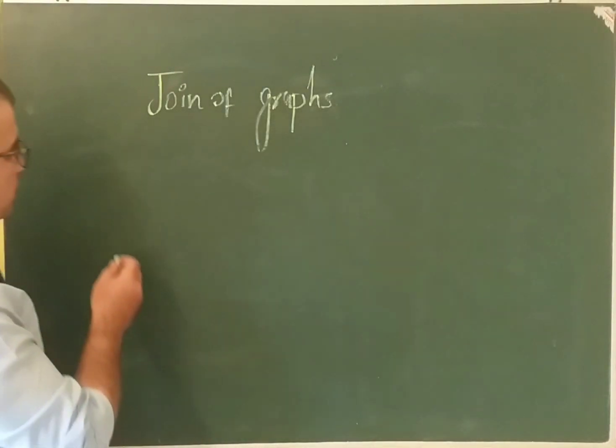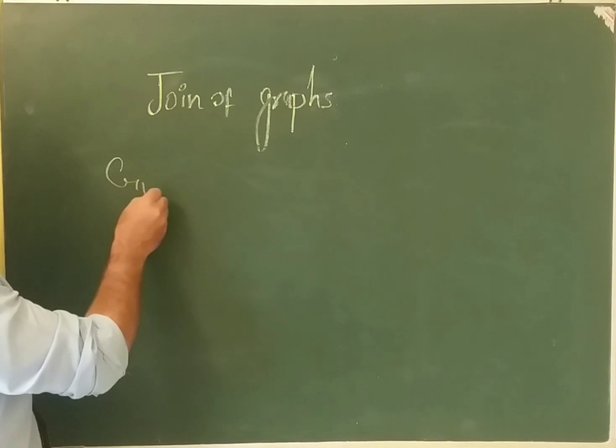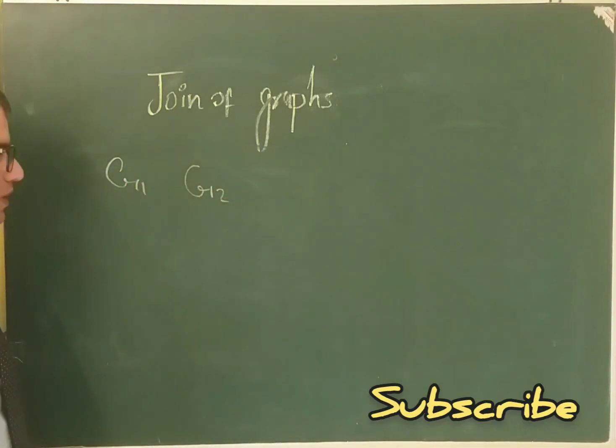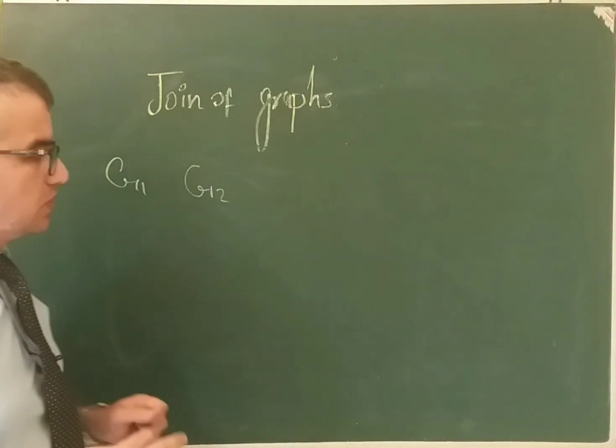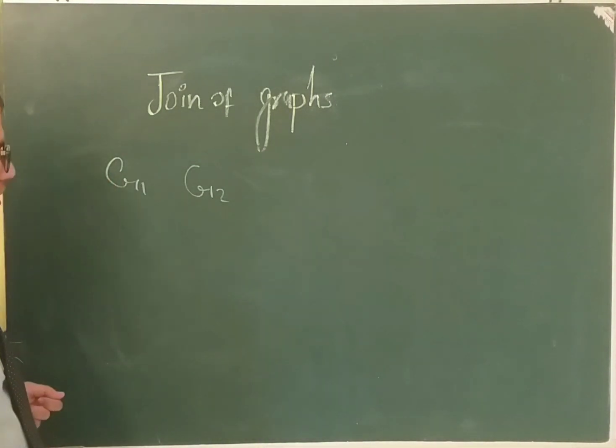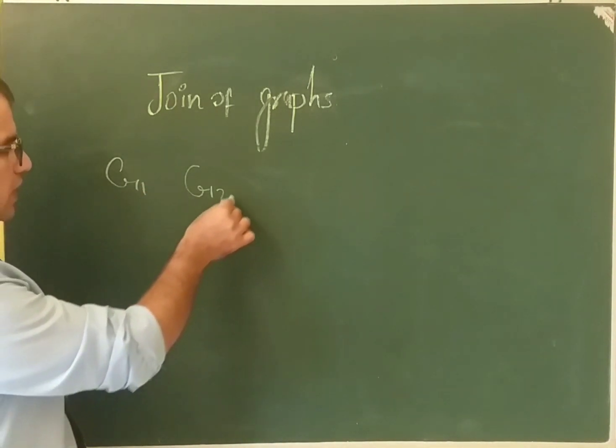Suppose G1 and G2 be two distinct graphs, two separate graphs. By joining every vertex of graph G1 to every vertex of graph G2, we are getting the join of graphs.